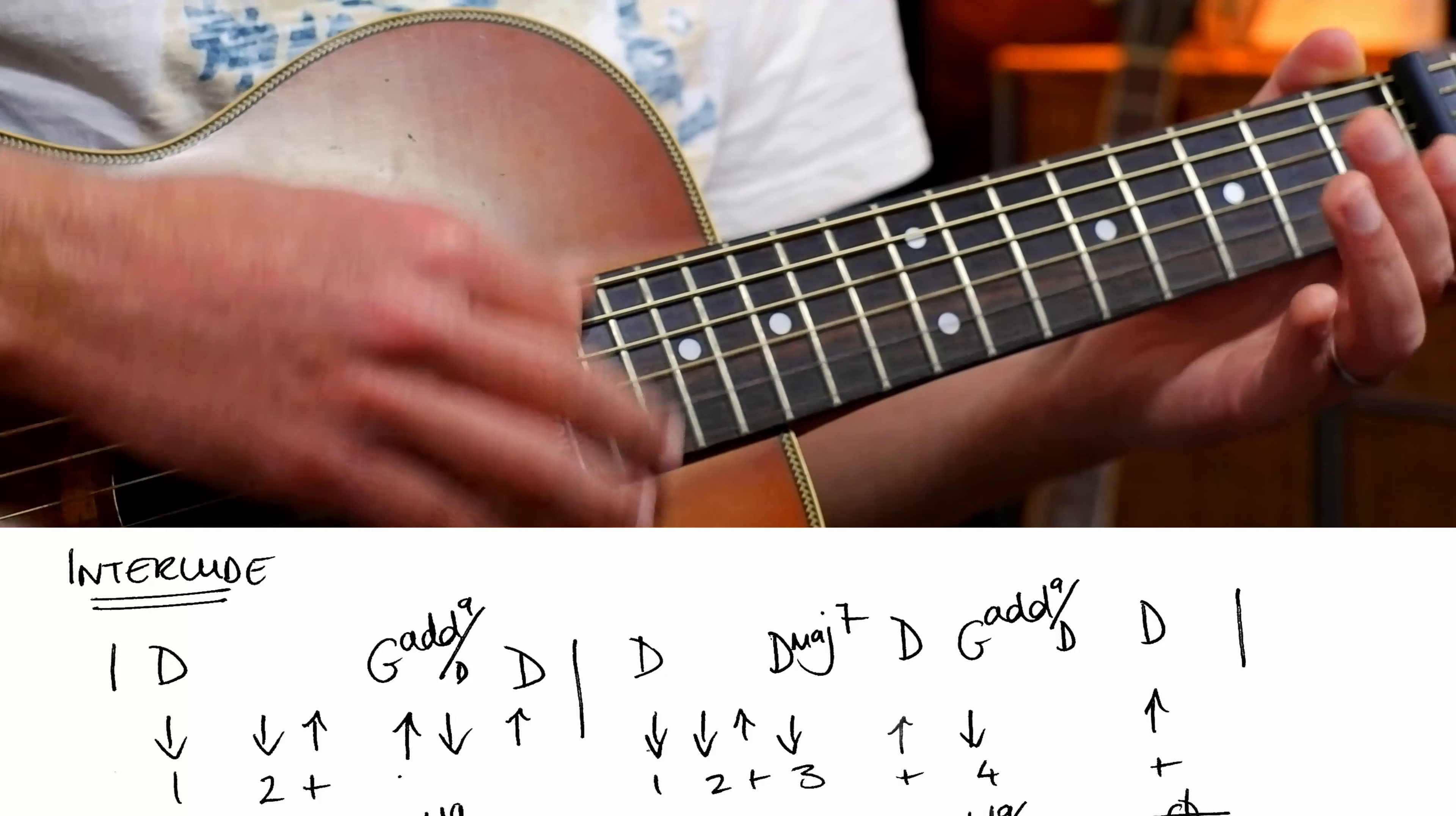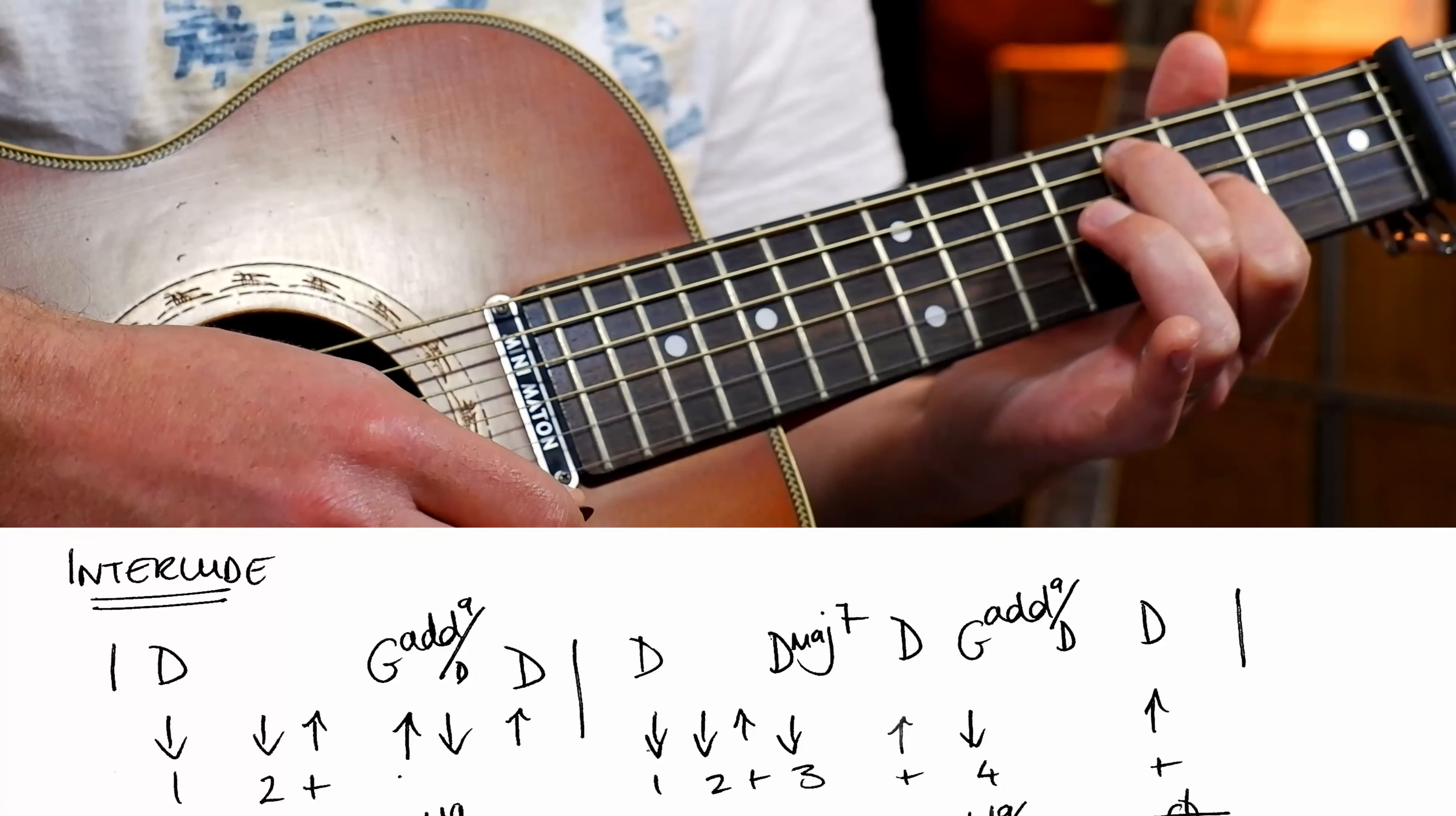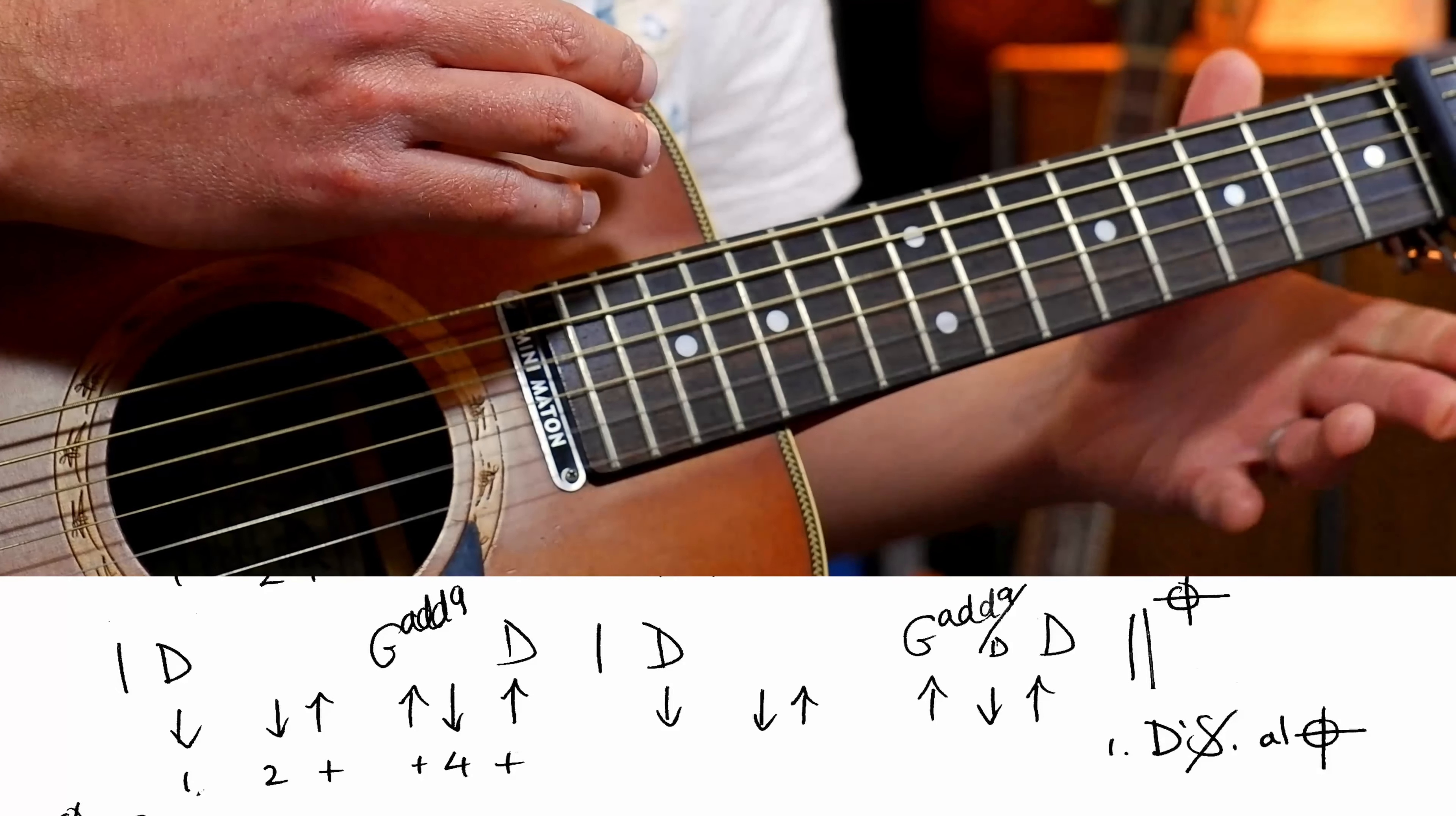Okay, and then we've got a little interlude that joins up the chorus and the verse. Which is... The sixth string... R2, so we're just doing that D major 7 chord, G chord. So... Okay.